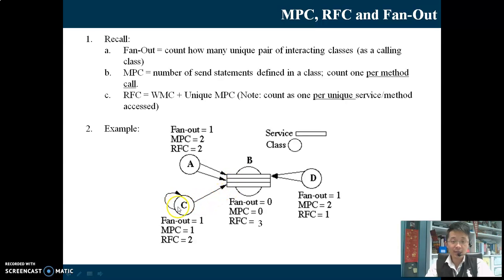Now, this arrow which is invoking itself is not counted as MPC because it is not invoking another class. However, it suggests that inside Class C, there is a method. Otherwise, it would not be able to invoke itself. RFC is the total of WMC and unique MPC. In this case, we already have one method inside C plus one unique MPC. That's a total of 2.